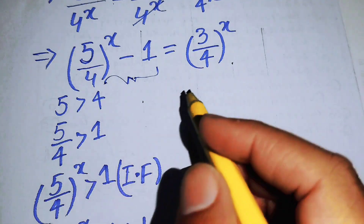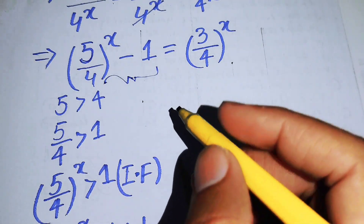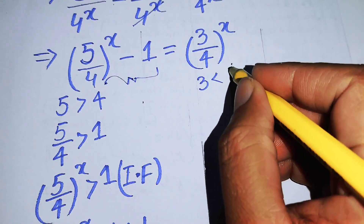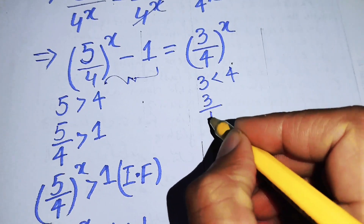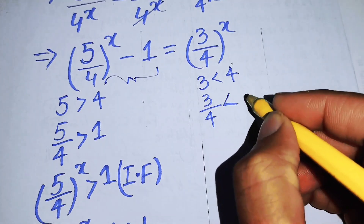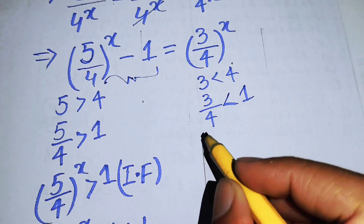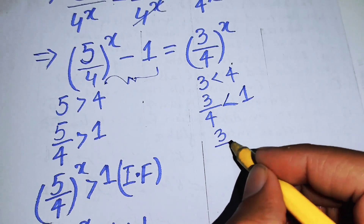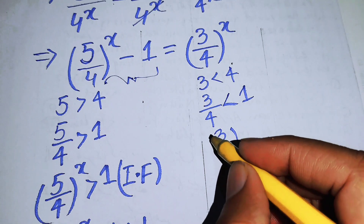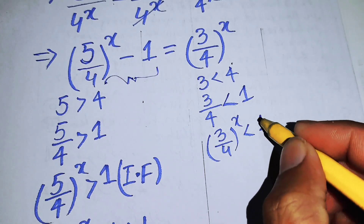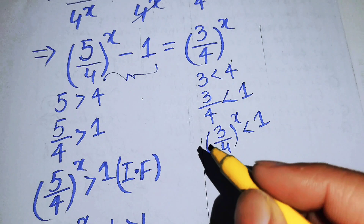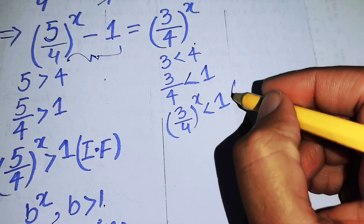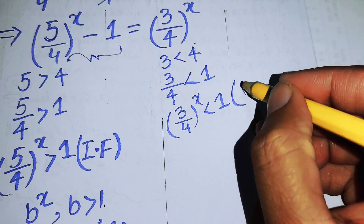Now moving to the right-hand side: 3 is less than 4, so 3/4 is less than 1. This means (3/4)^X is less than 1 for positive X, and (3/4)^X is a decreasing function.